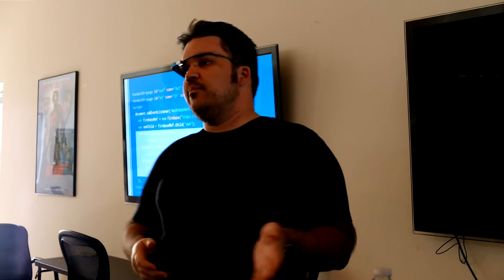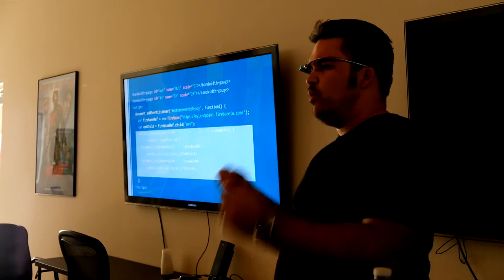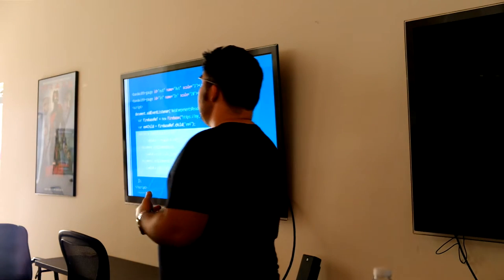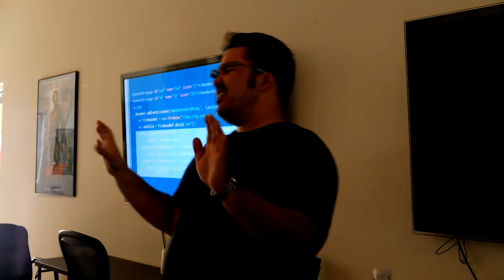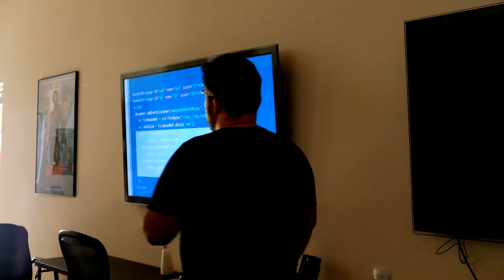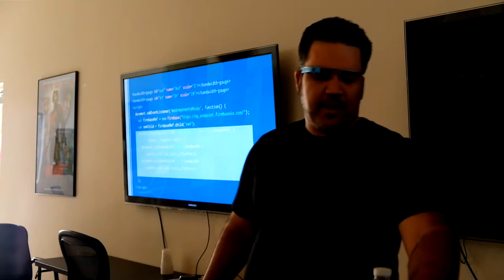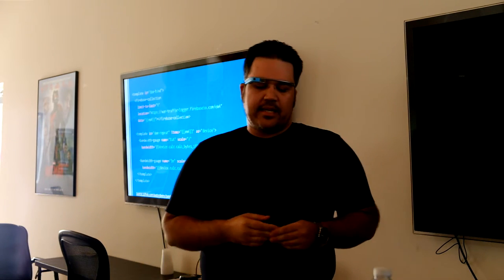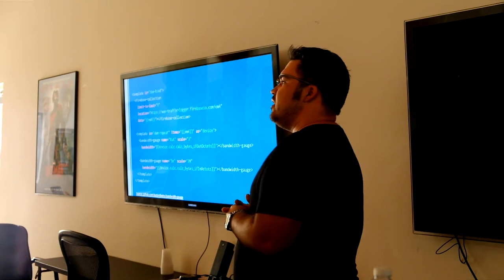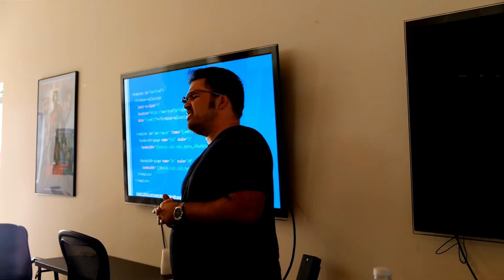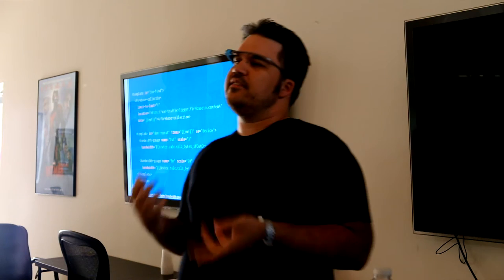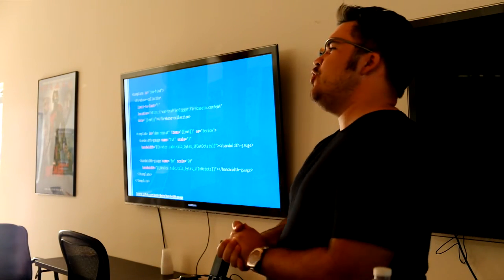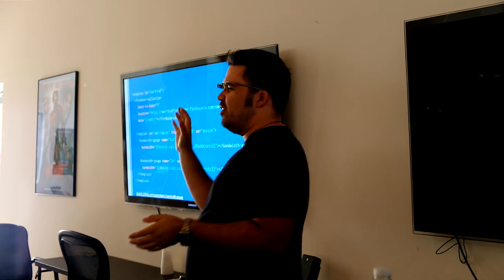There's an example on the Polymer Summit site in the code labs that goes into this as well. But you're also thinking — Polymer has an element for everything, right? Indeed there is. Looking at the Polymer elements catalog, there are quite a few Firebase elements. Specifically, we're going to talk about `firebase-collection`. Think of it like jQuery plugins: you download it via Bower or a zip from the elements catalog, add it to your project, and import it like anything else.